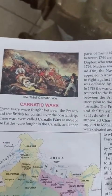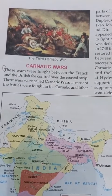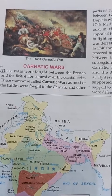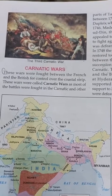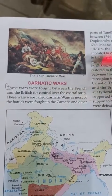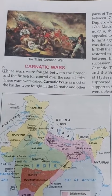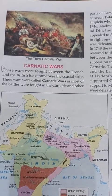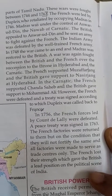These Karnatak Wars were very important and played a very important role in Indian history, as these wars established the East India Company as a powerful political force in India. These wars were fought between the French and the British to control over the coastal strips. They are called Karnatak Wars as most of the battles were fought in the Karnatak and other parts of Tamil Nadu, between 1744 and 1763.